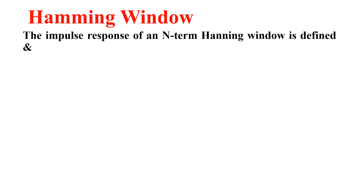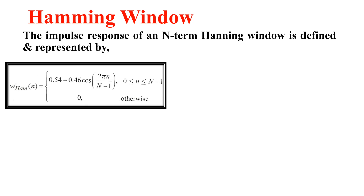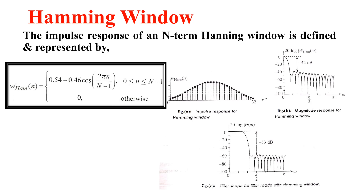The next one is the Hamming window. The impulse response of an N-term Hamming window is defined and represented by this formula: W_Ham(n) = 0.54 minus 0.46 cosine of (2πn / (N minus 1)), for N varying from 0 to N minus 1, and 0 otherwise. This gives the impulse response, magnitude response, and filter shape of the Hamming window — Figures A, B, and C.